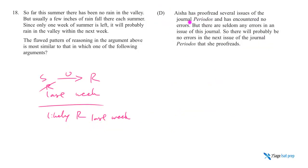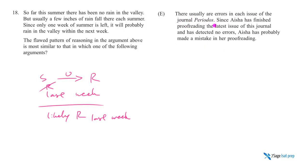Answer D says Aisha has proofread several issues of journal P, encountered no errors, but seldom any errors in the issue — we're talking about multiple issues with no errors, which is too different to analogize. Answer E says there are usually errors in each issue of P, which is good setup, but she has already finished reading the latest issue with no errors — that's like summer already ended with no rain. And there's something about her being mistaken, which also doesn't match.